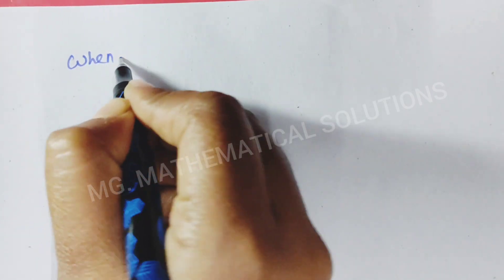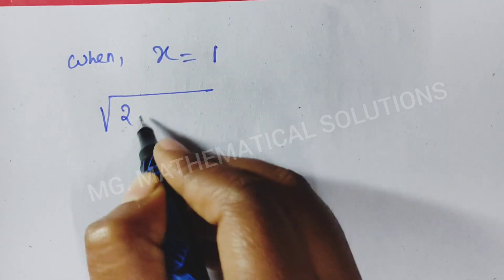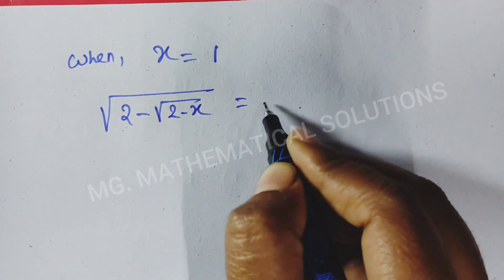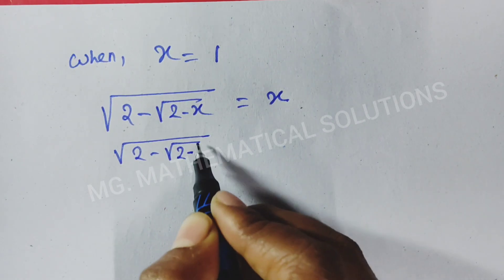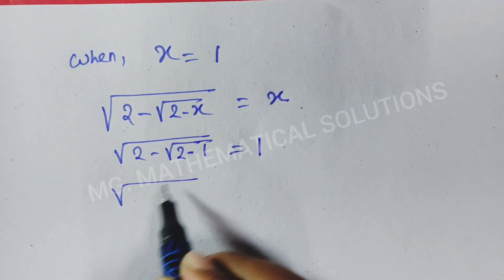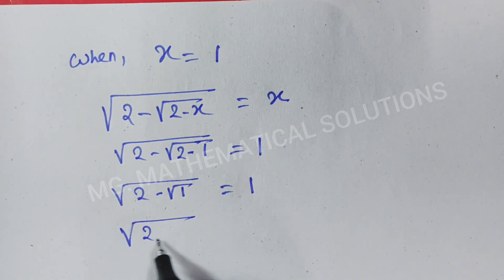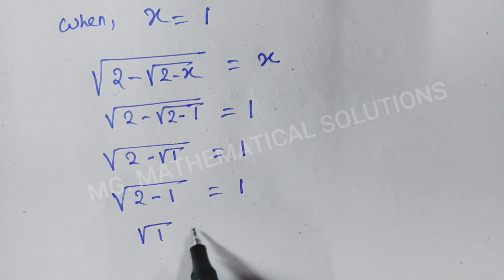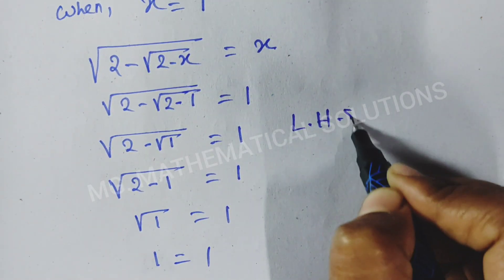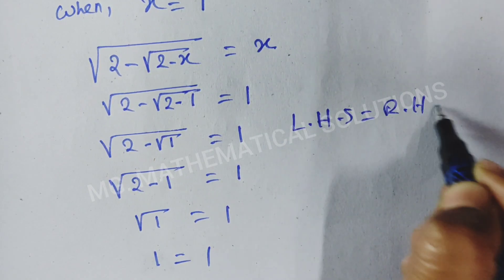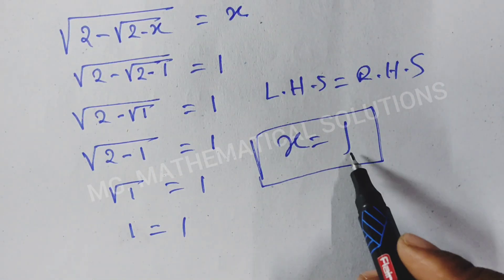Now when x equals 1: the given equation root under (2 minus root under (2 minus x)) equal to x gives root under (2 minus root under (2 minus 1)) equal to 1. So root under (2 minus root 1) equal to 1, which is root under (2 minus 1) equal to 1, so root 1 equal to 1, and 1 equal to 1. Left hand side equals right hand side. Hence x equal to 1. This is the value of x.